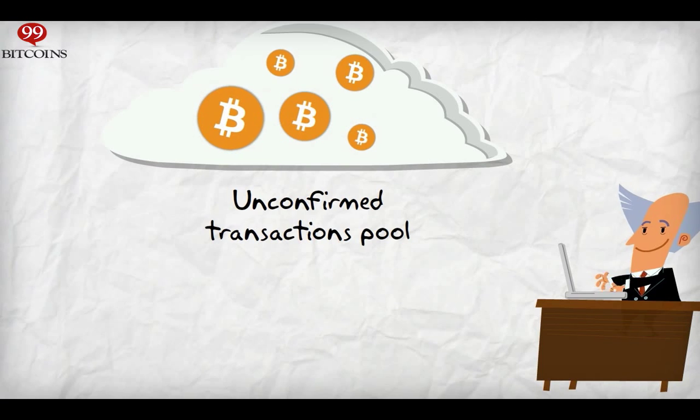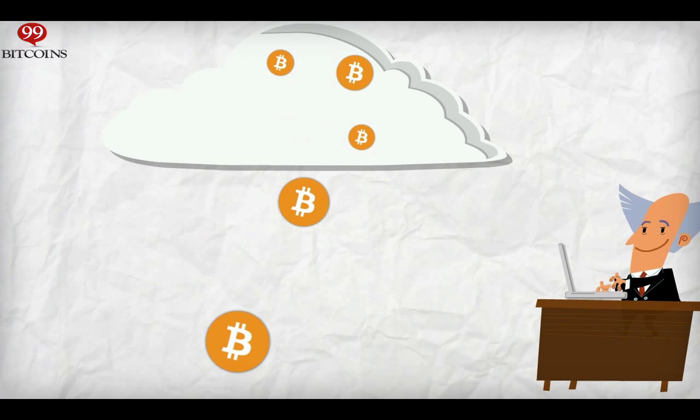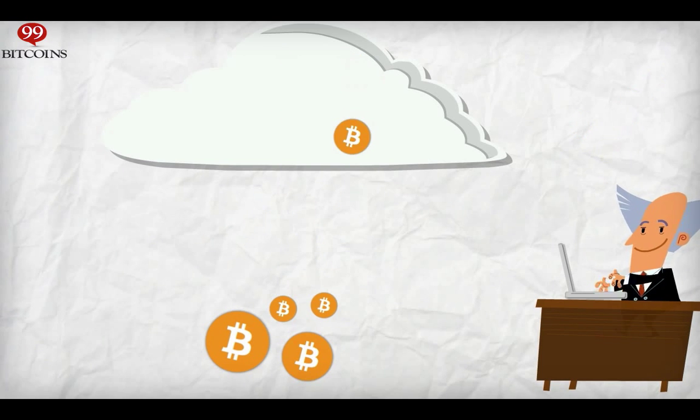Miners entered the unconfirmed transactions pool, took this transaction and others like it, verified they were valid—meaning I actually have the one Bitcoin to spend—and group them into a block.